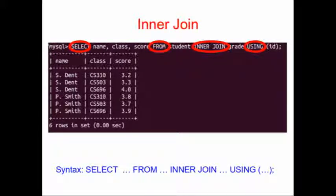Our syntax is very simple: SELECT, FROM, INNER JOIN, and USING. SELECT name, class, score FROM student INNER JOIN grade USING ID. We select the columns we want from the first table, inner join on the second table, using the ID as the key to join things together.